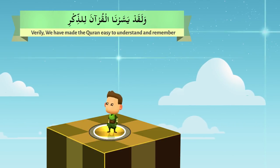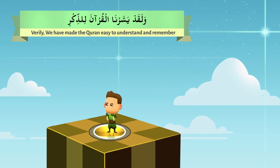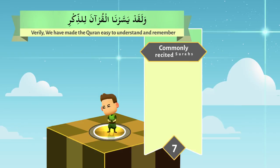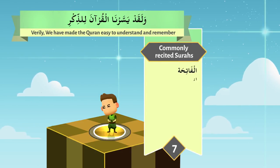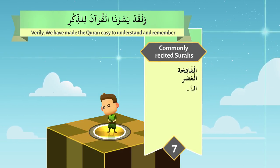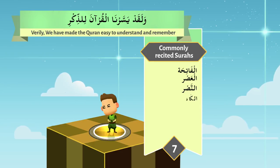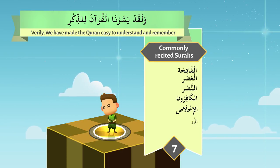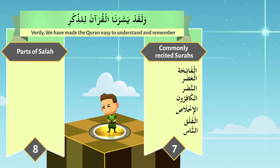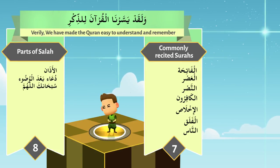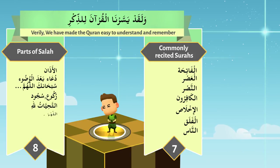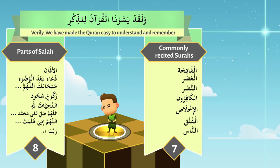If you learn the meaning of every word from a typical Salah — that is seven commonly recited Surahs: Surah Al-Fatiha, Wal-Asr, Idha Jaa Nasr Allah, Qul Ya Ayyuhal Kafirun, Qul Huwa Allahu Ahad, Qul A'udhu Bi Rabbil Falaq, Qul A'udhu Bi Rabbil Nas — and the parts of Salah such as Adhan, Dua after Wudu', Starting Prayer, and what we say in Ruku', Sujood, At-Tahiyyatu Lillah, Allahumma Salli Ala Muhammad, Allahumma Inni Zolamdu Nafsi, and Rabbana Aatina.